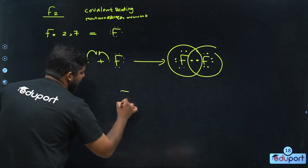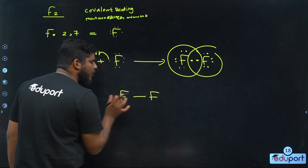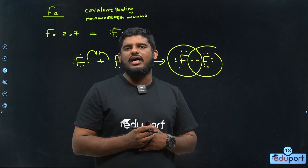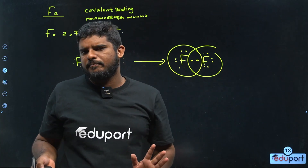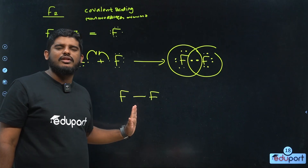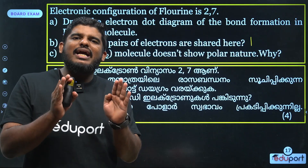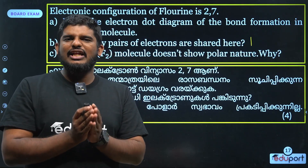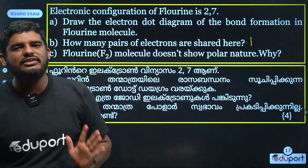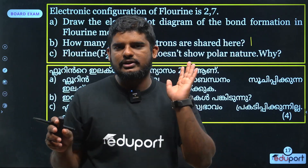I am at fluorine: F and F. The two atoms are the same. The electrons attract equally. They attract electrons equally — so there is no charge separation. It is not a polar nature. The two fluorine atoms attract electrons equally, so that is not polar nature.